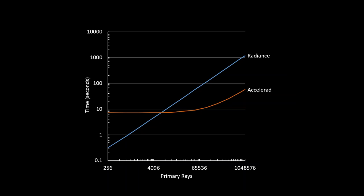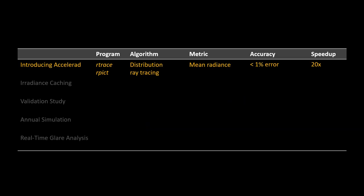Looking at how simulation time varies with the number of rays: while Radiance scales linearly, after about a million rays Accelerad achieves a speedup of about 20 times. So using distribution ray tracing, Accelerad achieves accuracy within 1% and a speedup of about 20 times.